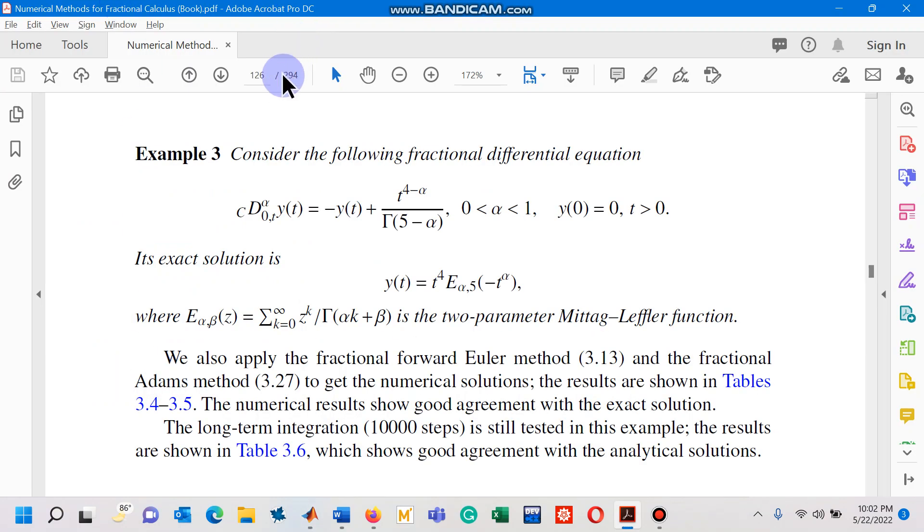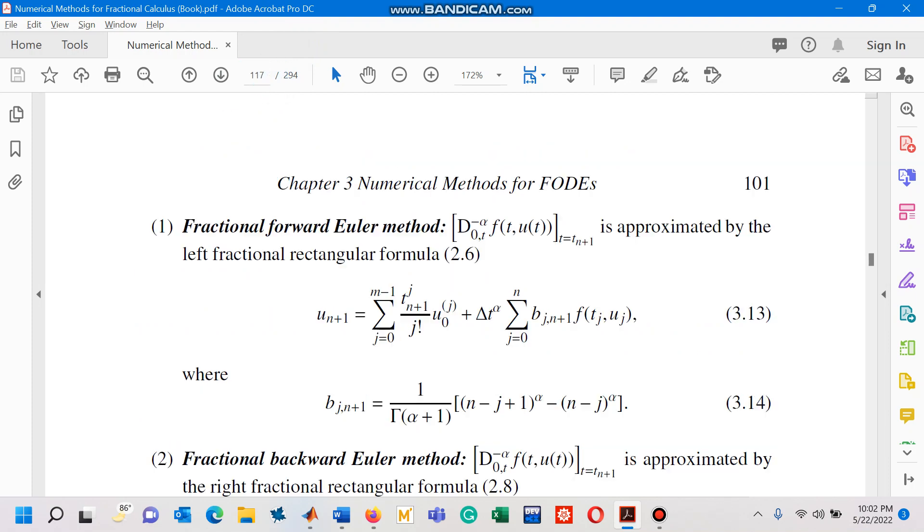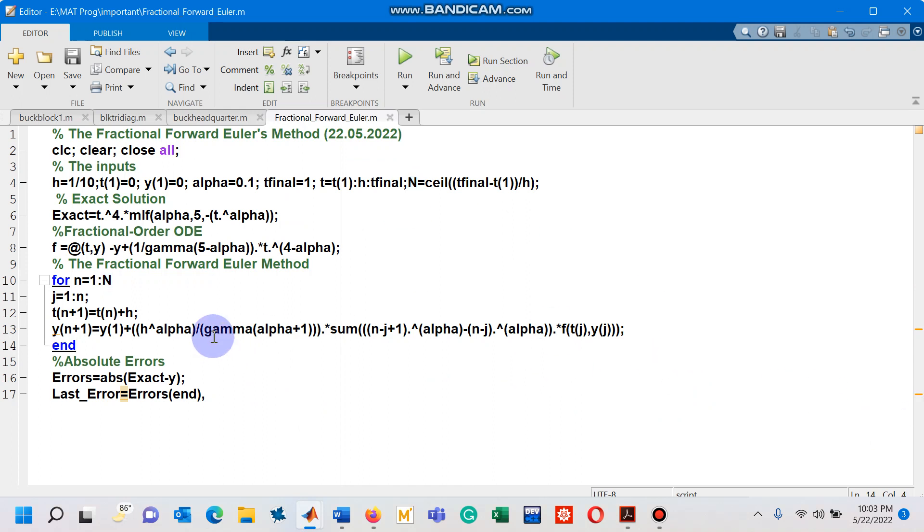Equations 3.13 and 3.14, this is what the fractional forward Euler's method is. This is one of the famous numerical methods for solving fractional order initial value problems. This is the method that I have coded in a loop.